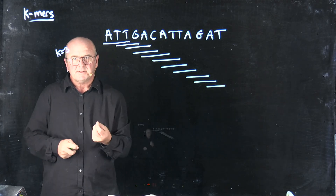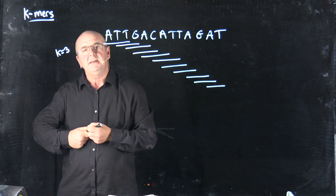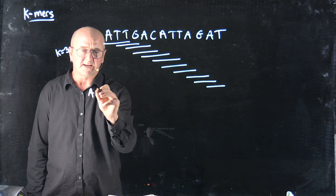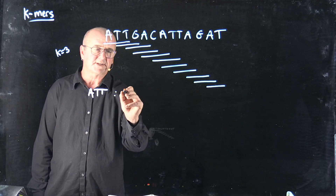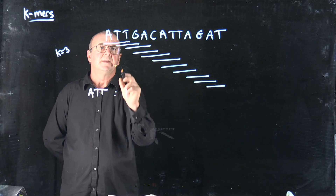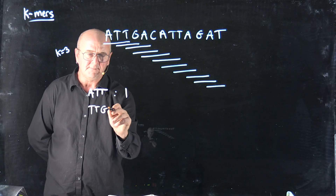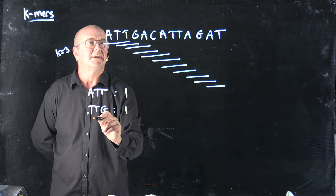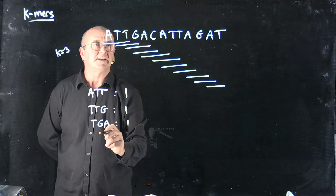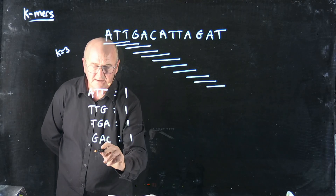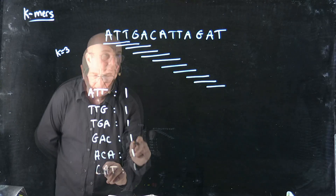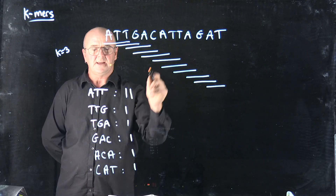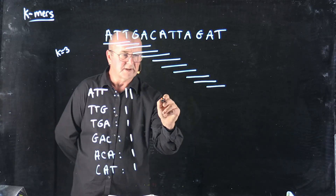Now, if I'm counting those K-mers, the naive approach is to say: my first K-mer is ATT, and I'm just going to keep a count of how many times I see it. My next K-mer is TTG, and I keep a count of how many times I see that. And so on — TGA, GAC, ACA, CAT. Then ATT — I've already seen that, so I can just add another count. TTA — it's not quite the same, so I'll keep count of that separately.